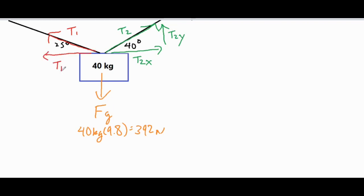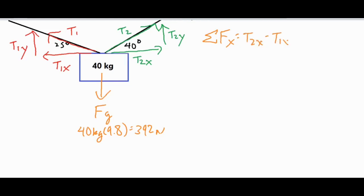We analyze the sum of the forces in the x and y directions separately. Summing all forces in the x direction, we only have two: T2x minus T1x equals zero newtons, because our object is at rest and the sum of forces along each axis must be zero. Adding T1x to both sides gives us T2x equals T1x.